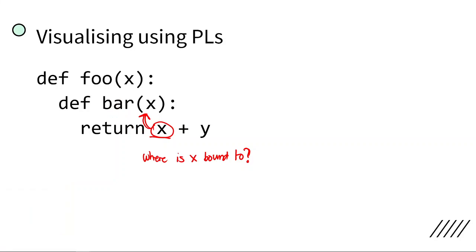For example, if we pass 1, 2, 3 to the outer and then 4, 5, 6 to the inner, the value of x when executing that line of code would be 4, 5, 6 — not 1, 2, 3. Because x is not bound to the outer function. It is bound to the parameter x of the function bar.